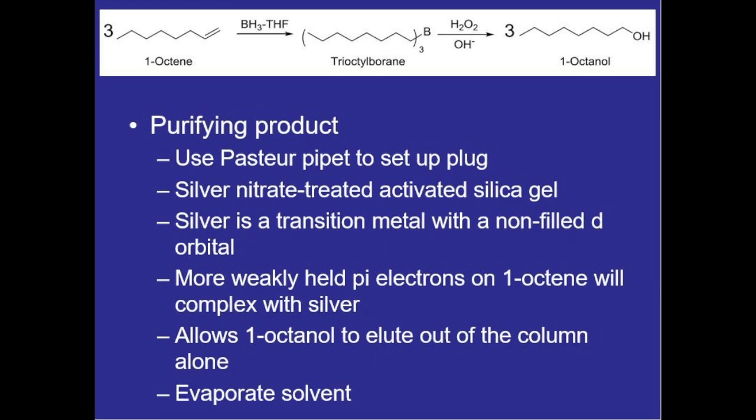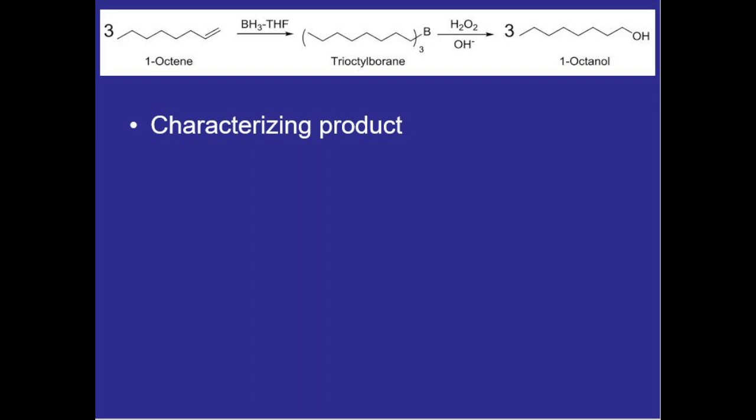And once we've gathered about five milliliters of solution we'll evaporate the ether pentane solvent leaving our purified product. And then we'll characterize that product just to make sure that we did produce the desired one octanol by using infrared spectroscopy.